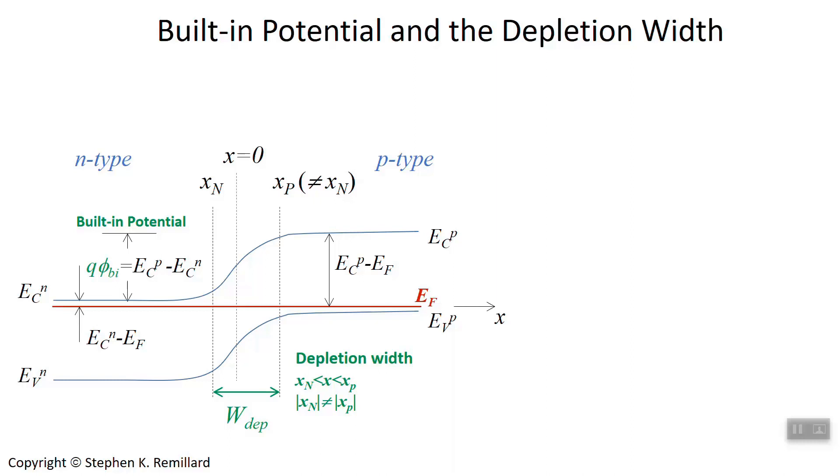And the height it goes up is the built-in potential times Q, and the same for the valence band edge. The depletion width is the region in which there is space charge. So within these two outer dashed vertical lines, there is a net charge. There's not charge neutrality. It's because there are fixed donor and acceptor ions in this region, which create an electric field and a distribution of non-zero charge.